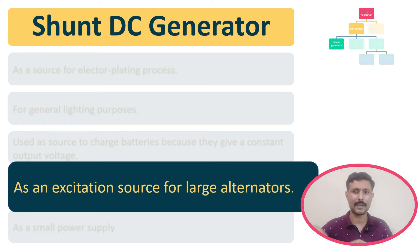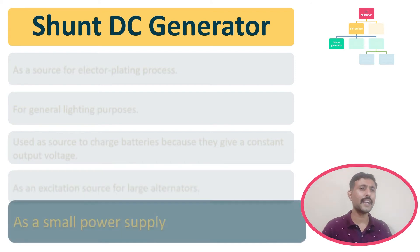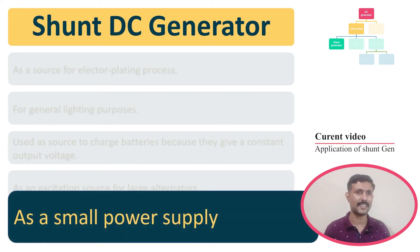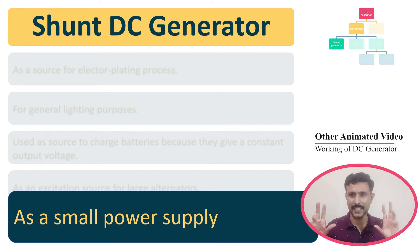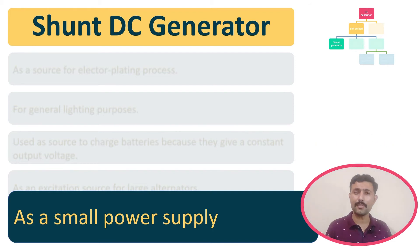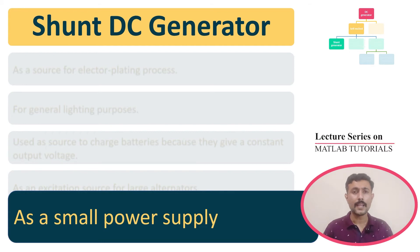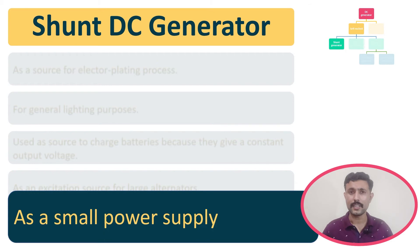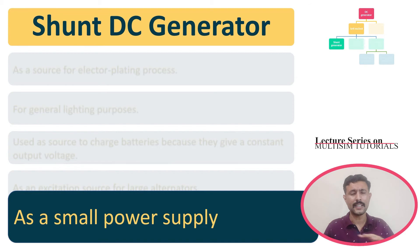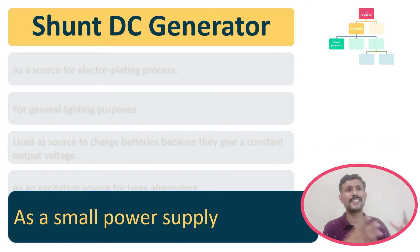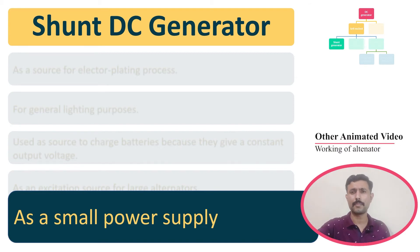The next application is that we can use this DC shunt generator as a small power supply. Why? Because it can maintain its output voltage constant. Even for small variations of load, it can still maintain constant output voltage. So for that purpose, we can use this DC shunt generator.